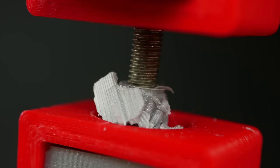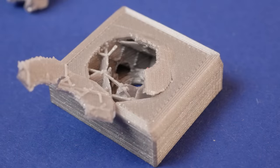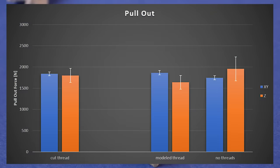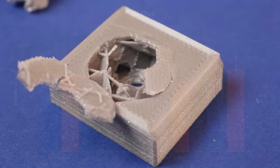All parts besides the modeled threads that were printed horizontally failed with a whole threaded section shearing out of the part. The threads themselves weren't the weak point but more the material around. Still, with around 200kg of failure load they were quite strong and all methods seem feasible for adding threads to your parts.